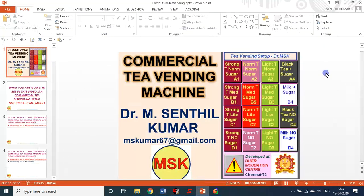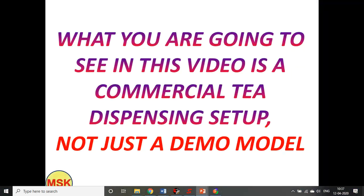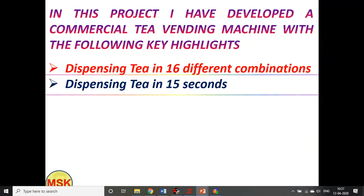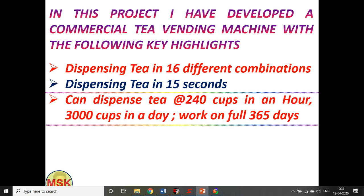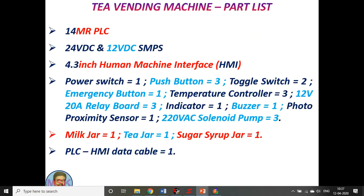Now you are going to see the demonstration of a full commercial tea dispensing setup — real milk, real tea, real sugar, all in liquid form. Tea is dispensed in different combinations; in 15 seconds you get your combination. You can dispense roughly 240 cups per hour, meaning about 3,000 cups in a day. I used a 20MR PLC with 24V DC SMPS, 12V DC for the PLC and other actuators, and a 4.3-inch HMI.